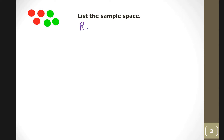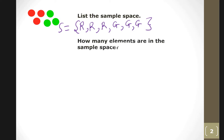The sample space is: red, red, red, green, green, green. These are called the sample space. So how many elements are in the sample space? There are six — one, two, three, four, five, six. Three red and three green, so six elements in the sample space.